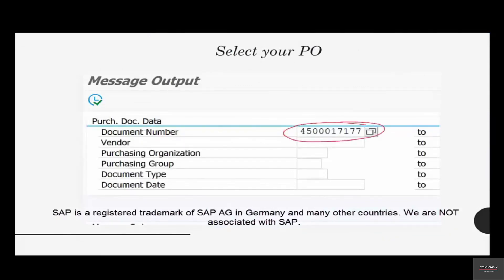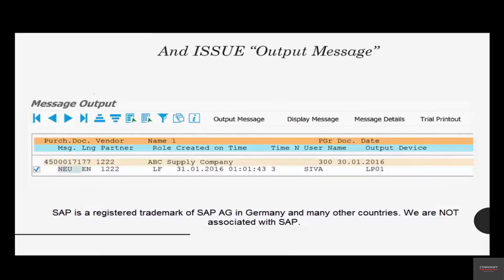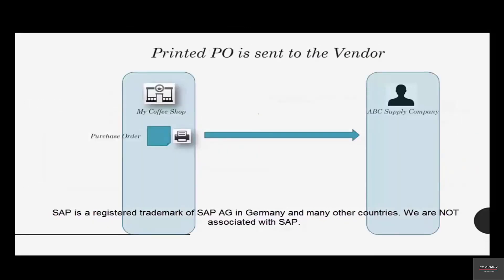That's how you print the PO. Select your purchase order number — one or more — then hit the Execute button. If there are more in the list, select whatever you want to print and click on 'Output Message'. We have printed the PO and then dispatched it to the vendor via mail or FedEx.